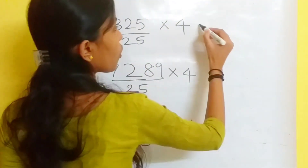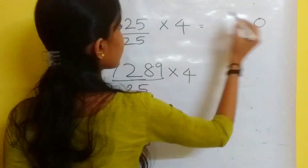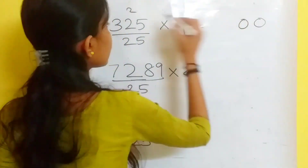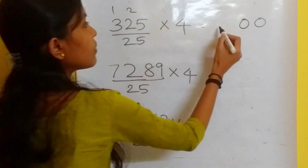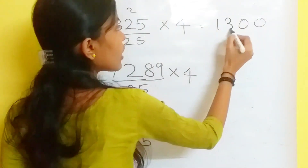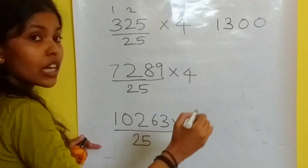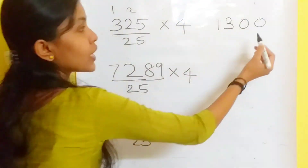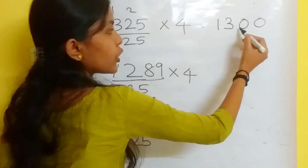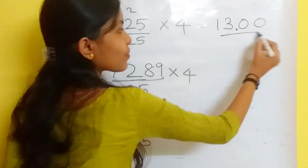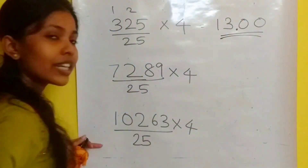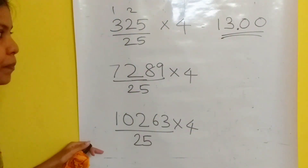Let's find the answer. Multiply by 4: 5 into 4 is 20, then 8, 10, 12, 13 — giving 29156. There should be two digits after the decimal place, so the answer is 291.56.